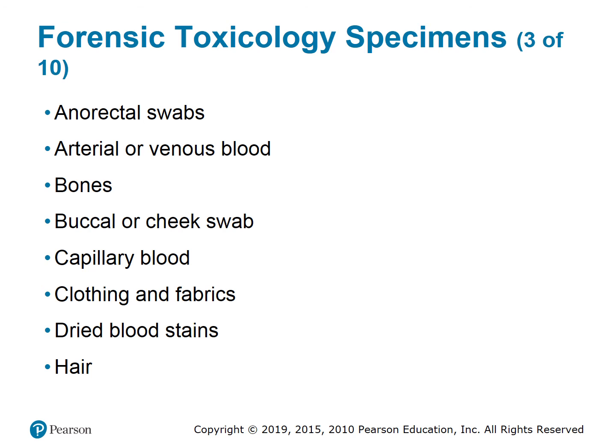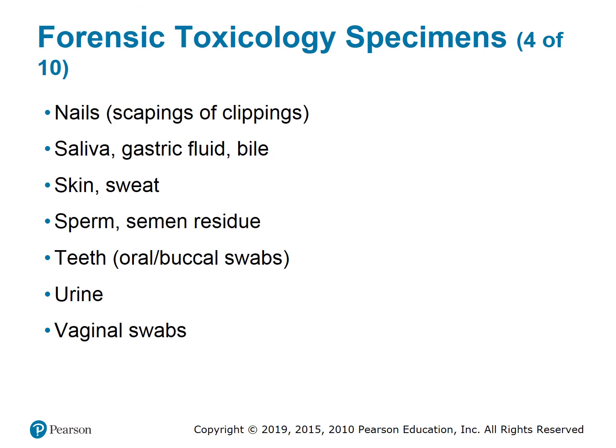Forensic toxicology specimens include anorectal swabs, arterial or venous blood, bones, buccal or cheek swabs, capillary blood, clothing and fabrics, dried blood stains, hair, nails (scrapings or clippings), saliva, gastric fluid, bile, skin, sweat, sperm, semen residue, teeth, oral buccal swabs, urine, and vaginal swabs.